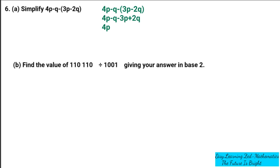So it's going to be 4p minus 3p. Then I'm going to write minus q, then plus 2q.